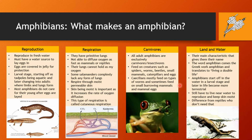Another characteristic is that all adult amphibians are exclusively carnivores or insectivores. They usually feed on spiders, worms, beetles, small mammals, caterpillars, and eggs. Caecilians mostly feed on types of worms and will sometimes feed on small burrowing mammals and their eggs. And their main defining characteristic is that they live both on land and in water. The word 'amphibian' comes from the Greek word meaning 'living a double life.' They start in water as tadpoles, eventually becoming more terrestrial, but must still have a water source nearby to reproduce, lay eggs, and keep their skin moist to breathe.